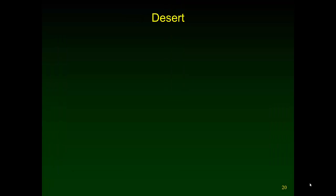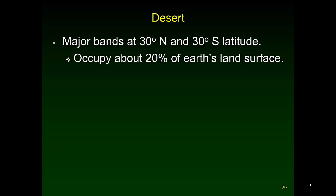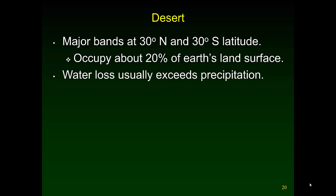Now we're at the next biome. We're going to do three biomes in this lecture, starting with the desert biome. Because of the placement of the Hadley cells, deserts are found in major bands at about 30 degrees north and 30 degrees south latitude, occupying about 20% of the Earth's land surface.